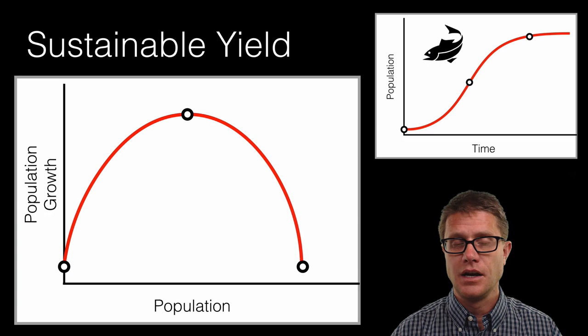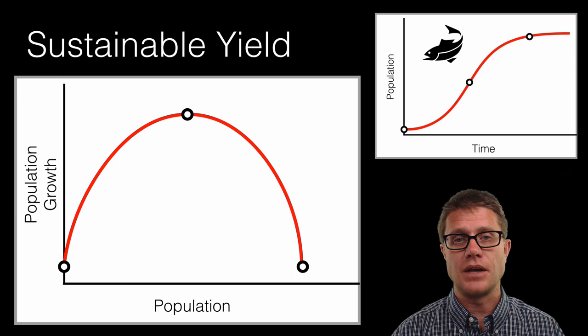And so we get a graph that looks like this. It is not very interesting but it is incredibly powerful. What we can do is use a graph like this to figure out that sustainable yield. How many fish can we catch?